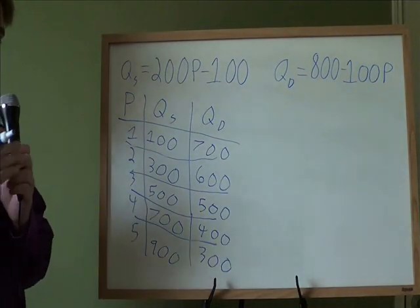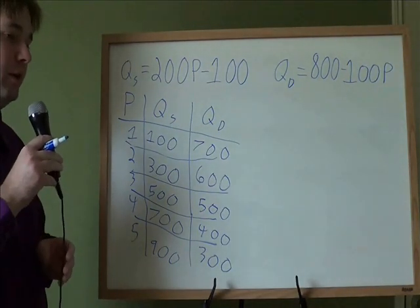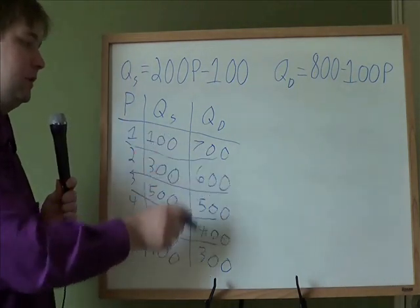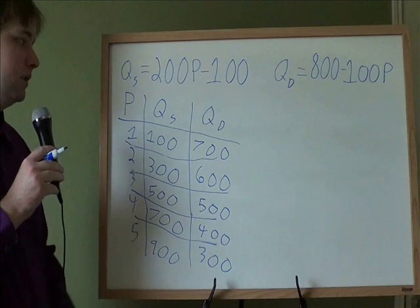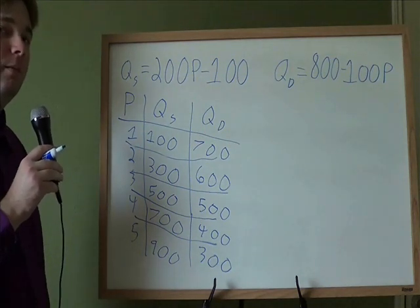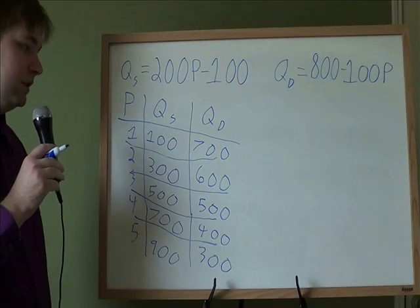And that's all it takes to find the table of quantity supplied and quantity demanded. You just keep plugging in your different values of P and getting your different answers out. And that's part A. That's also called a supply schedule and a demand schedule. They might be using that word instead of table, but that's still the same process.